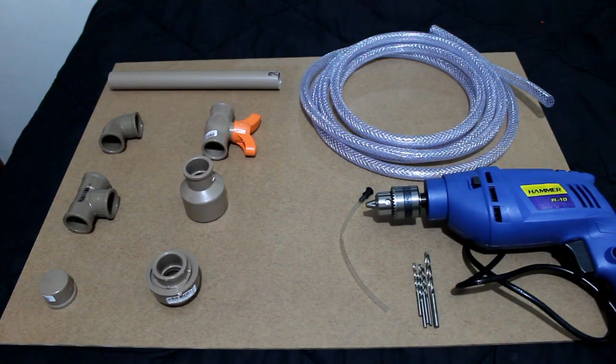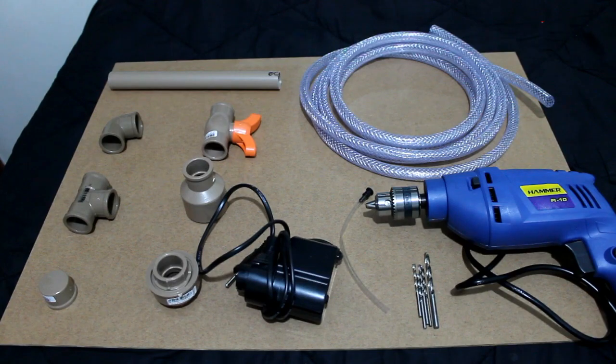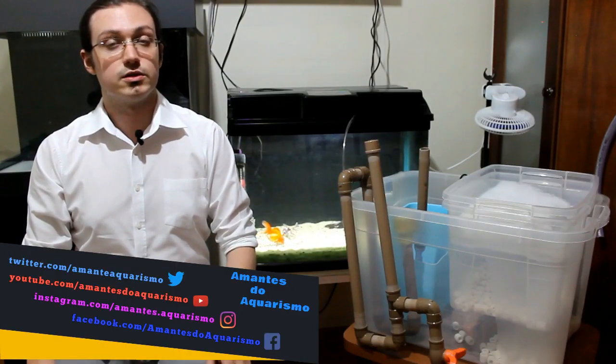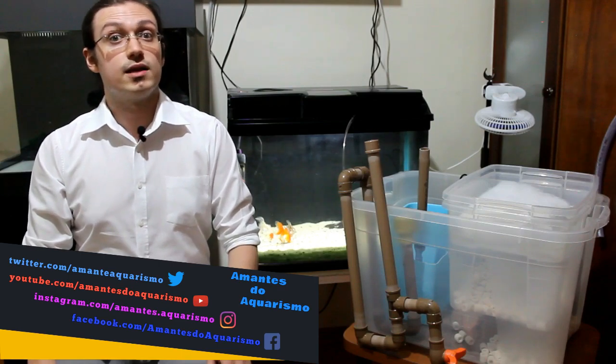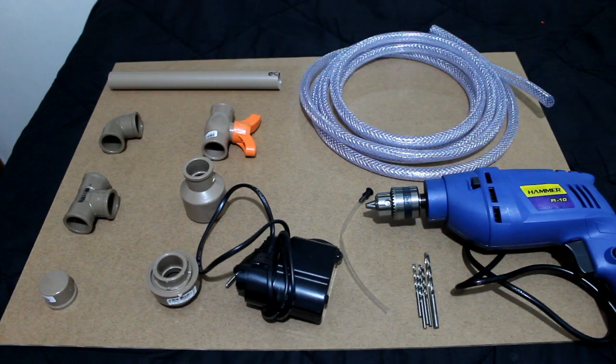Uma furadeira. Brocas pequenas para metal e não parede. Bomba de recalque. Tesoura. Lixa de ferro grão 150. Serra para cortar canos. E para quem quiser, cola específica para colagem de canos. No nosso caso, vamos apenas encaixar os canos e não usaremos cola.